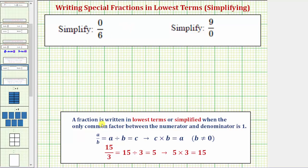So in general, if we have a fraction in the form of a over b, this equals a divided by b.